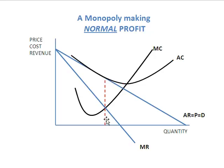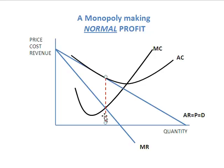That dotted line is run up to the demand curve, which is the blue curve. And it also happens to coincide with the black curve, which is clearly the cost curve.